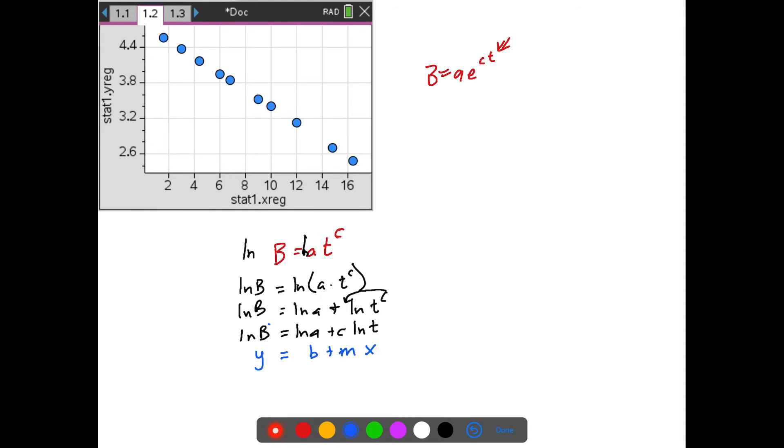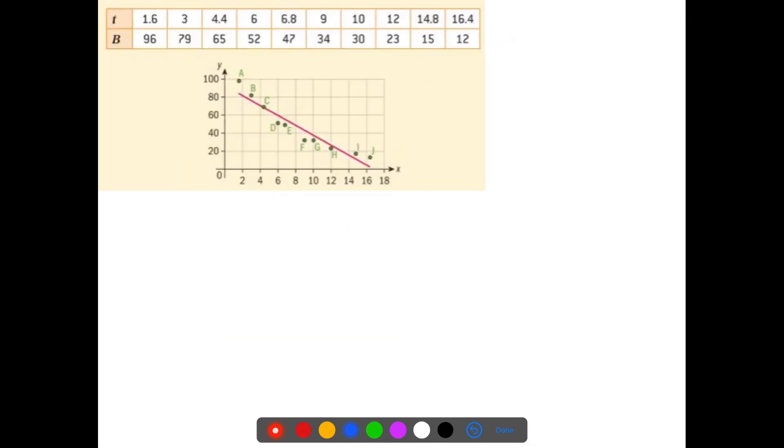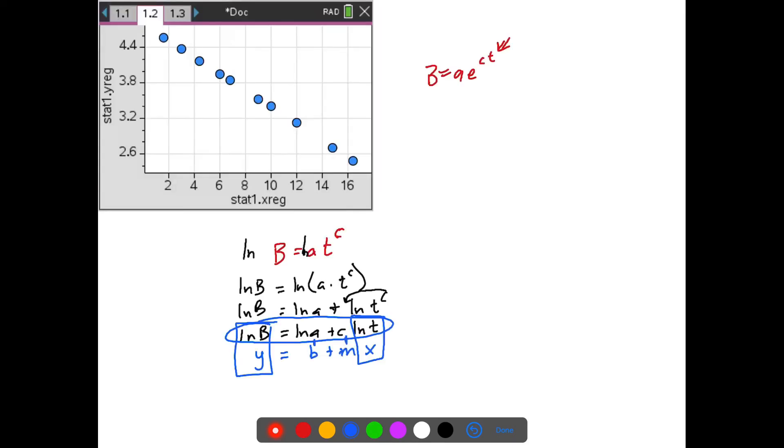This time the Y intercept would be natural log of A, this time the slope is C, but my X value needs to be the natural log of T, not just T. The Y value of course is still natural log of B. So I could go back into that same table as before, this one right here, and I could go natural log of 1.6, natural log of 3, put natural log in front of all those, put natural log in front of all these, and so then I would be graphing the natural log of T versus the natural log of B. Now when I did that, I went ahead and put that into my calculator, and this is what it looks like.